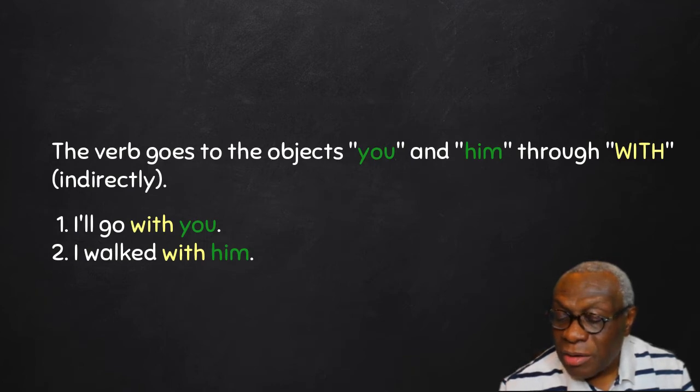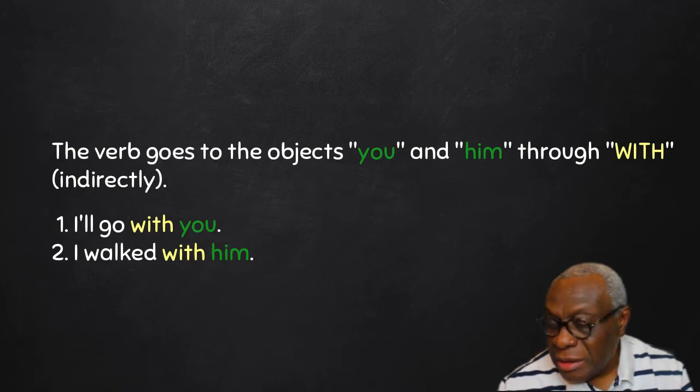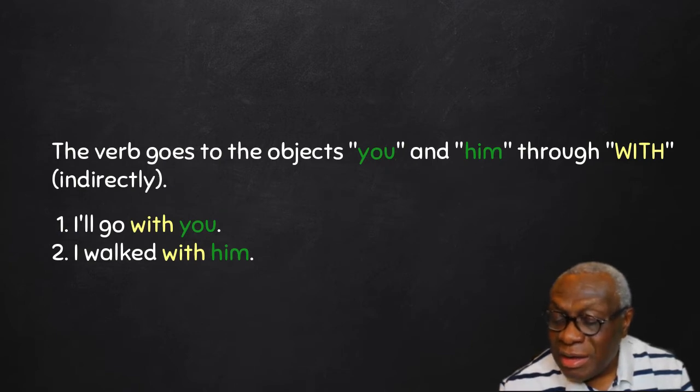Now, the verb goes to the object you and him, I repeat, through with. So the verb reaches the object indirectly because of that interference of the preposition with. There are other prepositions which we will look at in subsequent lessons.